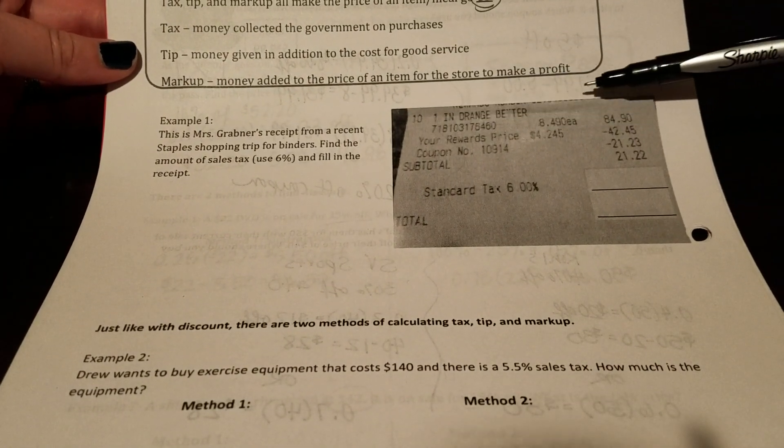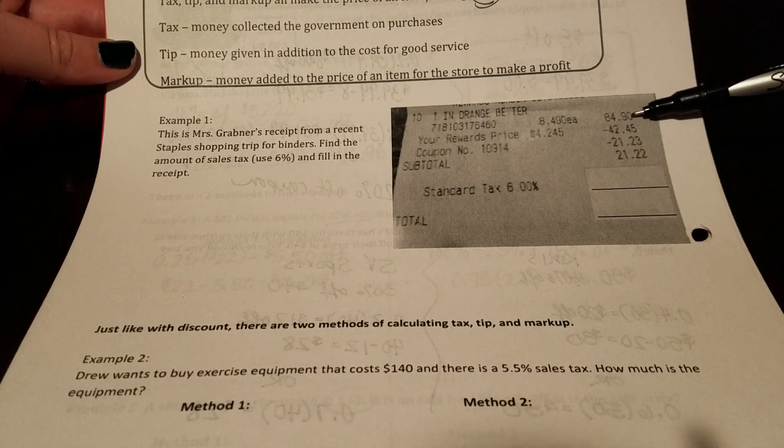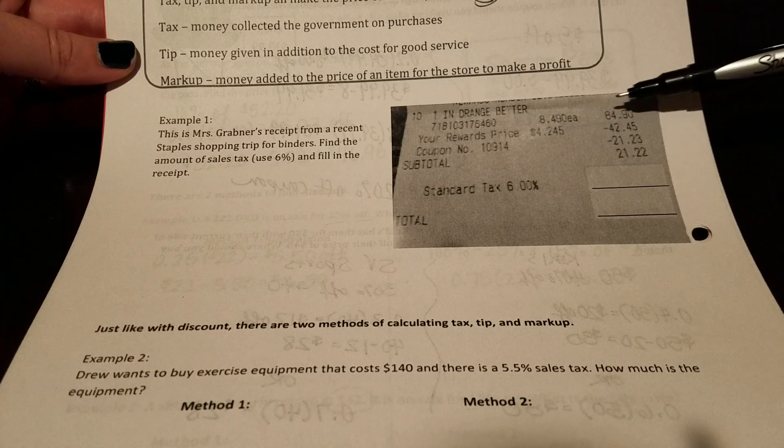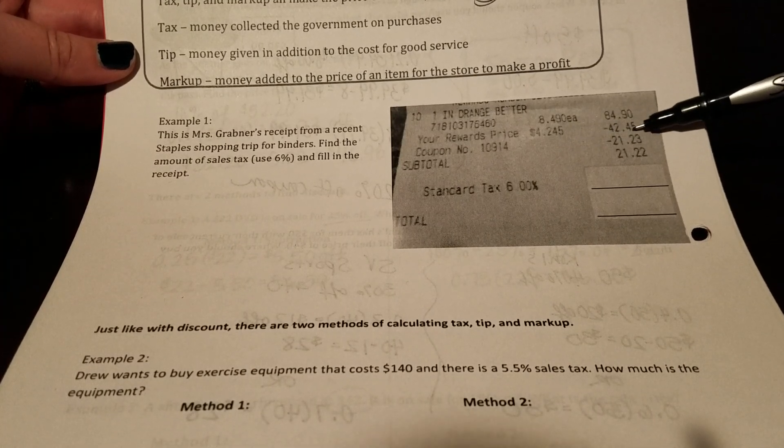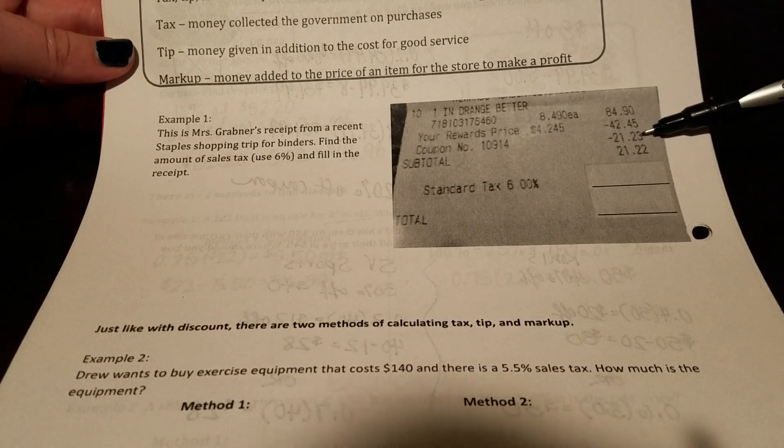I purchased 10 orange better binders from Staples. They were $8.49 each, so $84.90. My rewards price was $4.245, so it ended up being $42.45 that I got off. I also had another coupon which deducted the price.